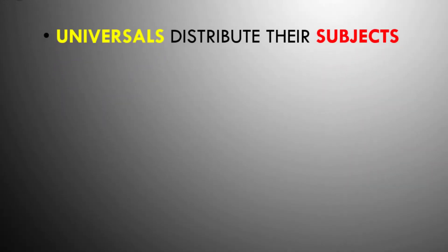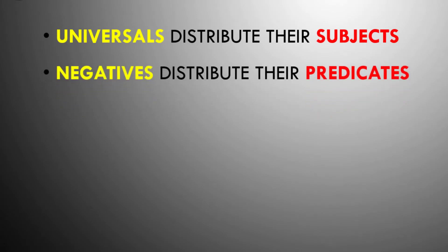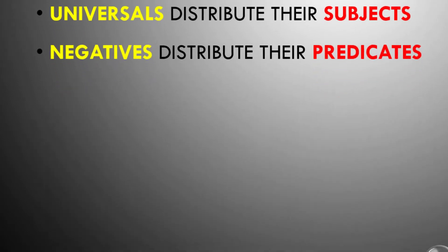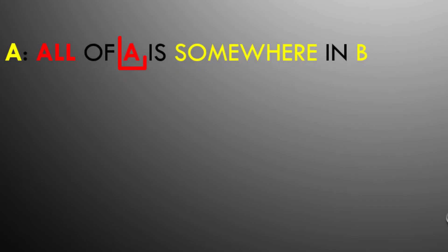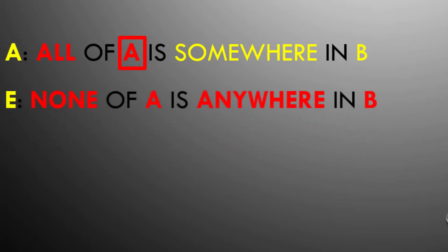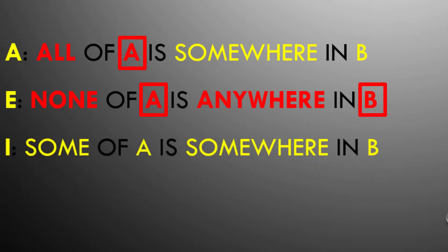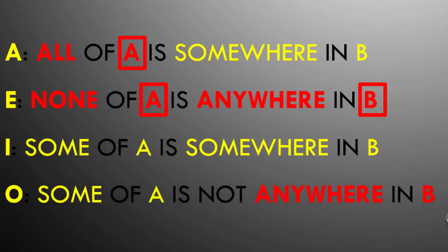Universals distribute their subjects and negatives distribute their predicates. A universal affirmative (A) has a distributed subject only — all A is somewhere in B. A universal negative (E) has both a distributed subject and a distributed predicate — none of A is anywhere in B. A particular affirmative (I) has nothing distributed — some of A is somewhere in B. And a particular negative (O) has a distributed predicate only — some of A is not anywhere in B.